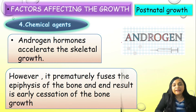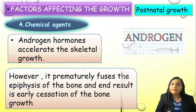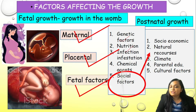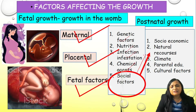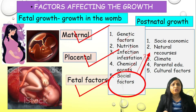Chemical agents like androgen also have some adverse effect. Initially it can accelerate growth, however the final height will be lower than normal. So we have discussed genetic factors, nutrition, infection, and chemical agents. Now let us quickly discuss social factors — this is just for understanding and common knowledge, and is not important from an exam point of view.